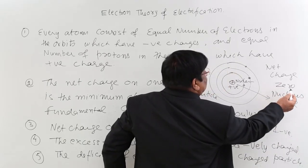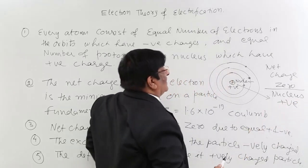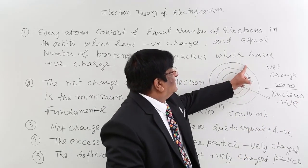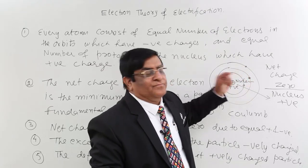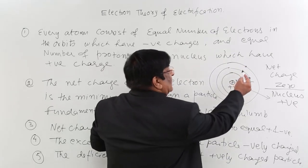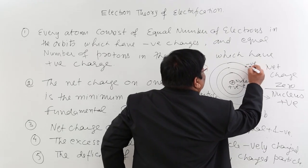If net charge is 0 and nucleus is positive, that means all these particles which were separated are carrying negative charge. So all these electrons are carrying negative charge.